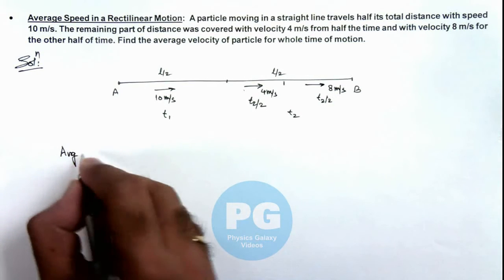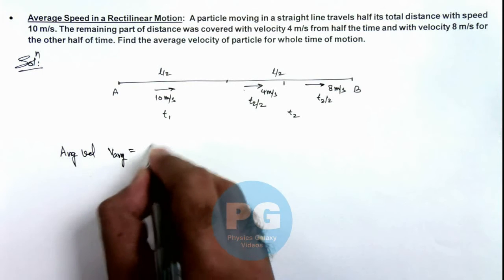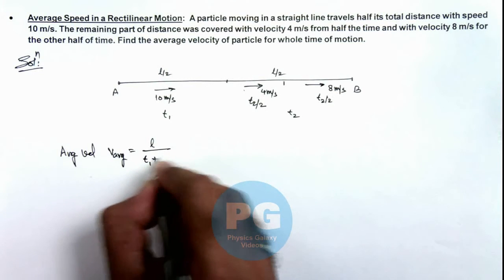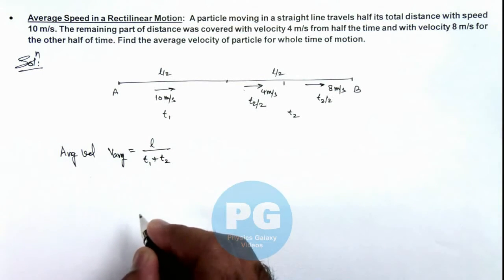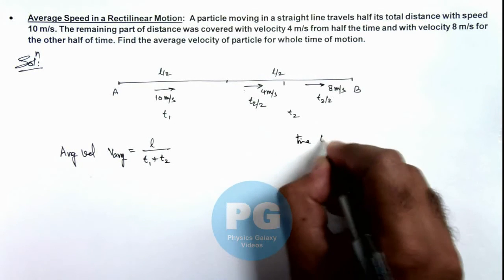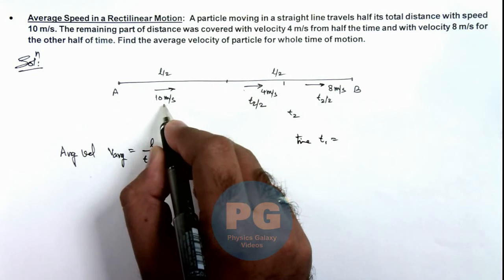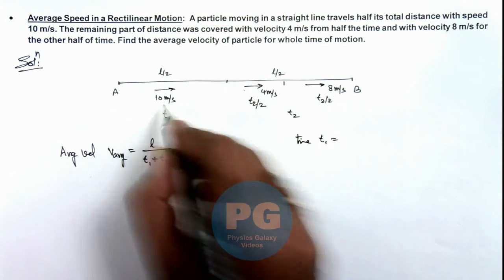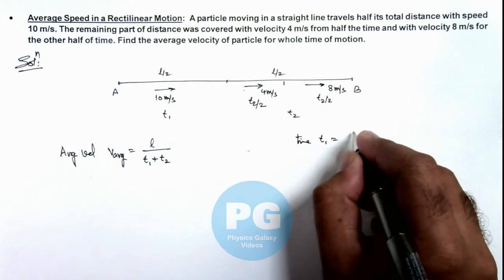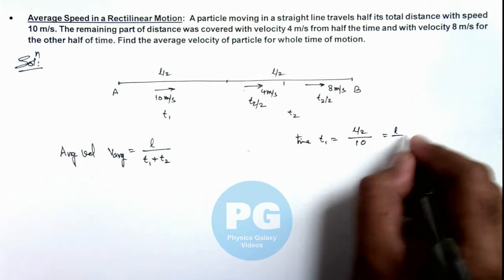So here we can directly write the average velocity of the particle as V average, that can be written as L by t1 plus t2. In this situation, we can write time t1 is equal to the distance L by 2, which is covered at a speed of 10 meters per second. So this can be written as L by 2 upon 10, which is L by 20.